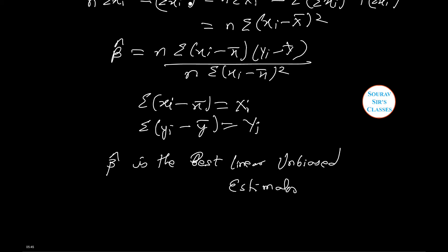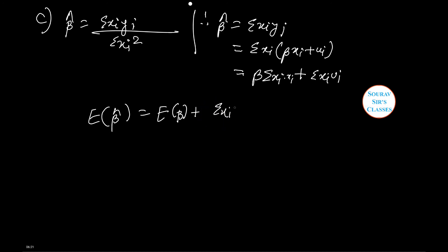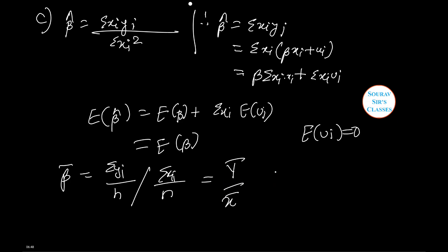Now we have beta cap equals summation X_i Y_i divided by summation X_i squared, therefore beta cap equals summation X_i Y_i. Putting in the values of y_i: summation X_i times (beta x_i plus u_i), which gives beta x_i times x_i plus x_i u_i. Now, expectation of beta cap equals expectation of beta plus summation X_i times expectation of u_i. We know that expectation of u_i equals zero, thus this equals expectation of beta. And beta-bar equals summation y_i over n divided by summation x_i over n, which equals y-bar over x-bar. Hence it is proved.